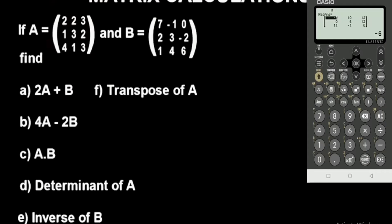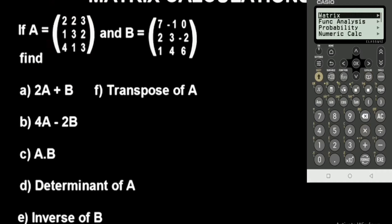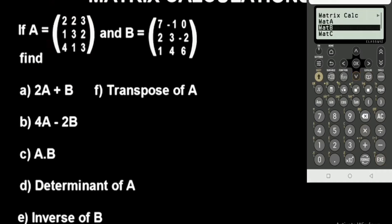For option C, we have A dot B — that stands for multiplication of the matrices. Go to the catalog button, matrix option, select Mat A, press multiply, go to catalog, matrix option, select Mat B, and press execute. This is the product.